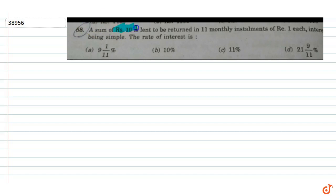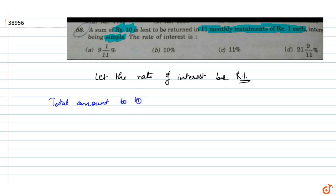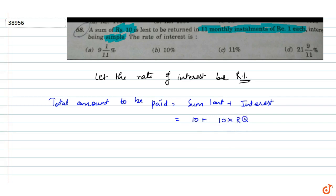The question given: a sum of Rs. 10 is lent to be returned in 11 monthly installments of Rs. 1 each, interest being simple. Find the rate of interest. Let the rate of interest be R%. Total amount to be paid is the sum lent plus interest in 11 months: 10 + (10 × R × 11/12)/100 = 10 + 11R/120. This is Equation 1.